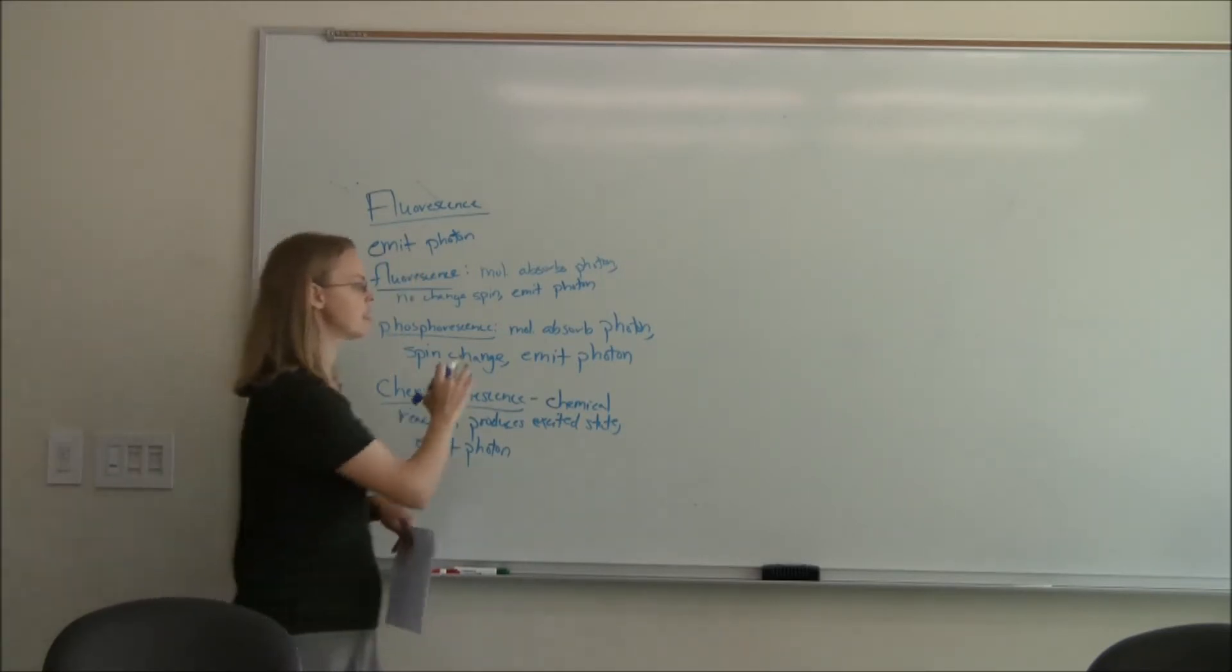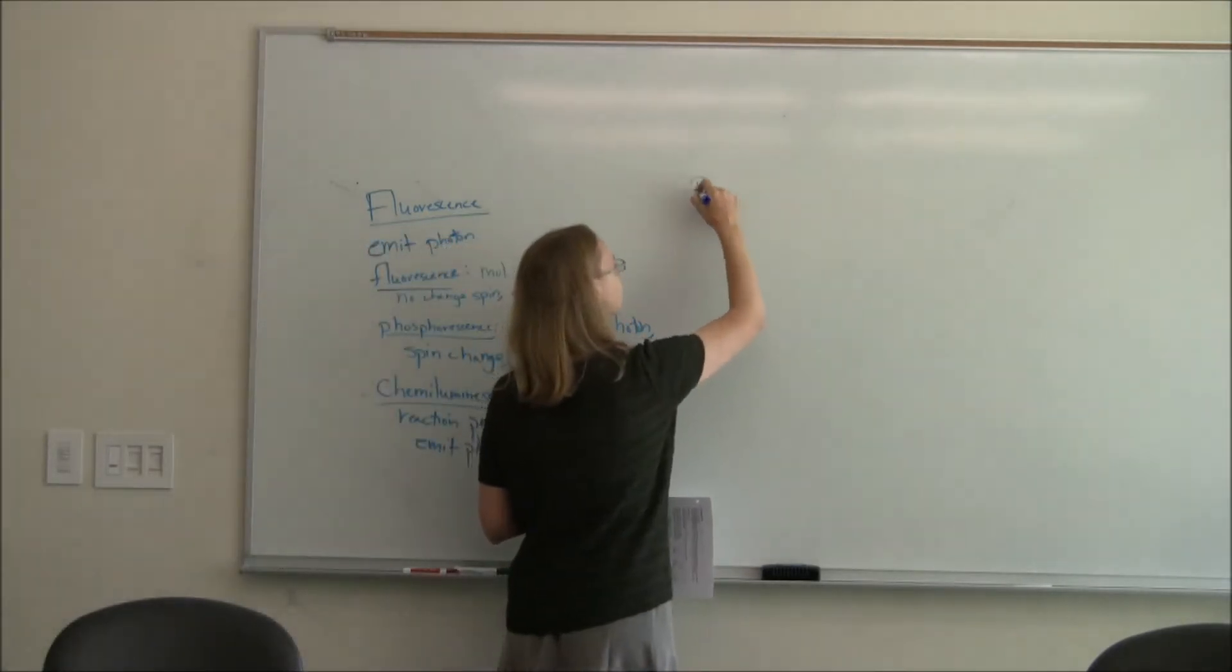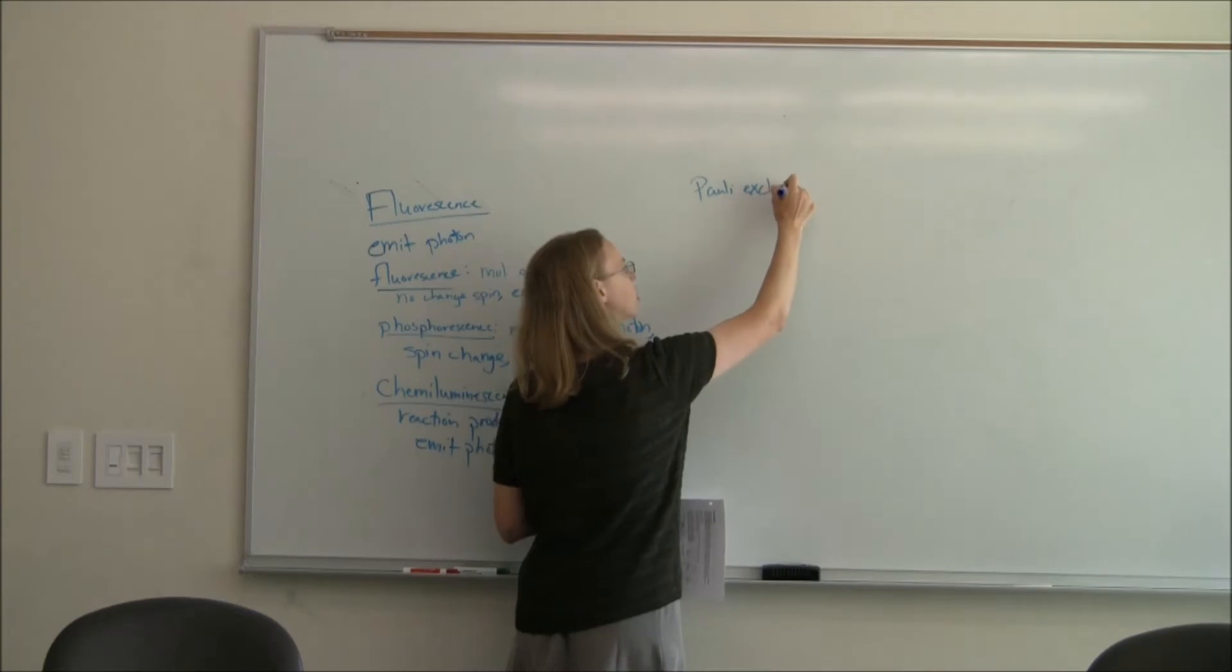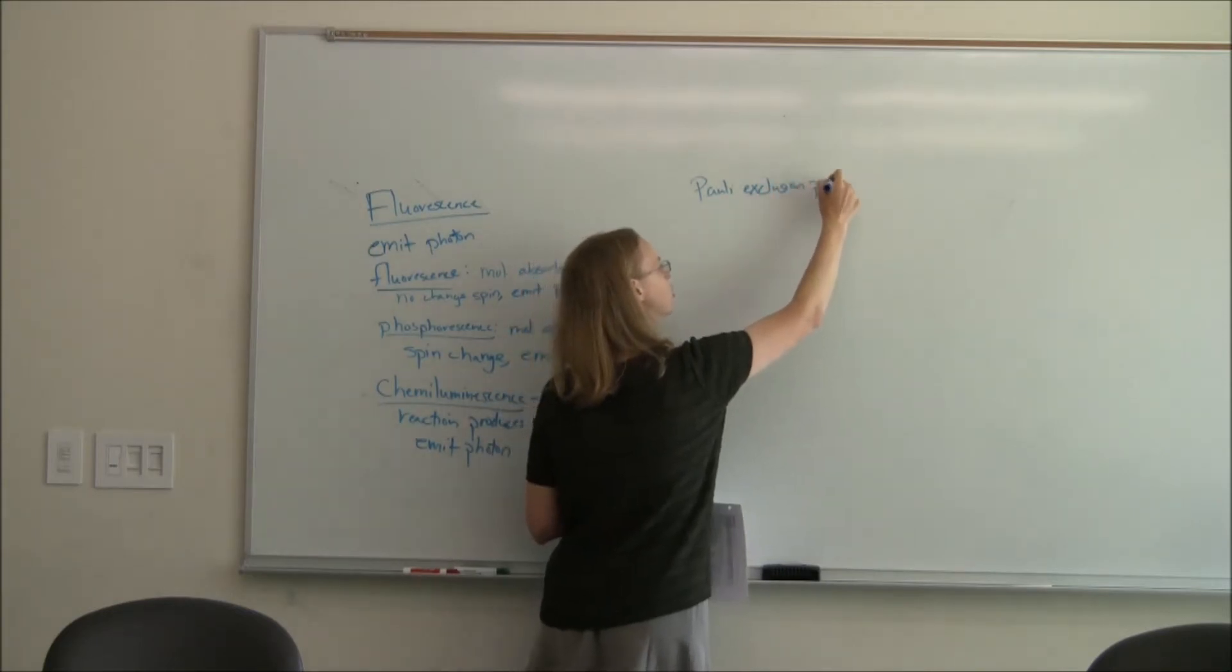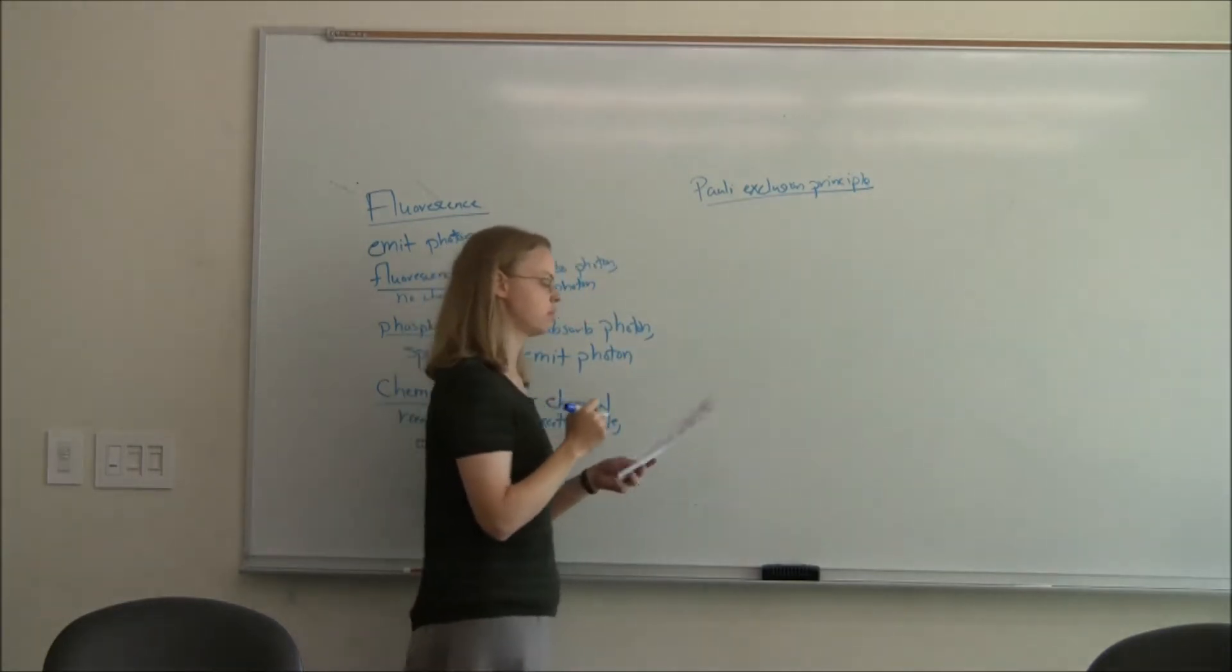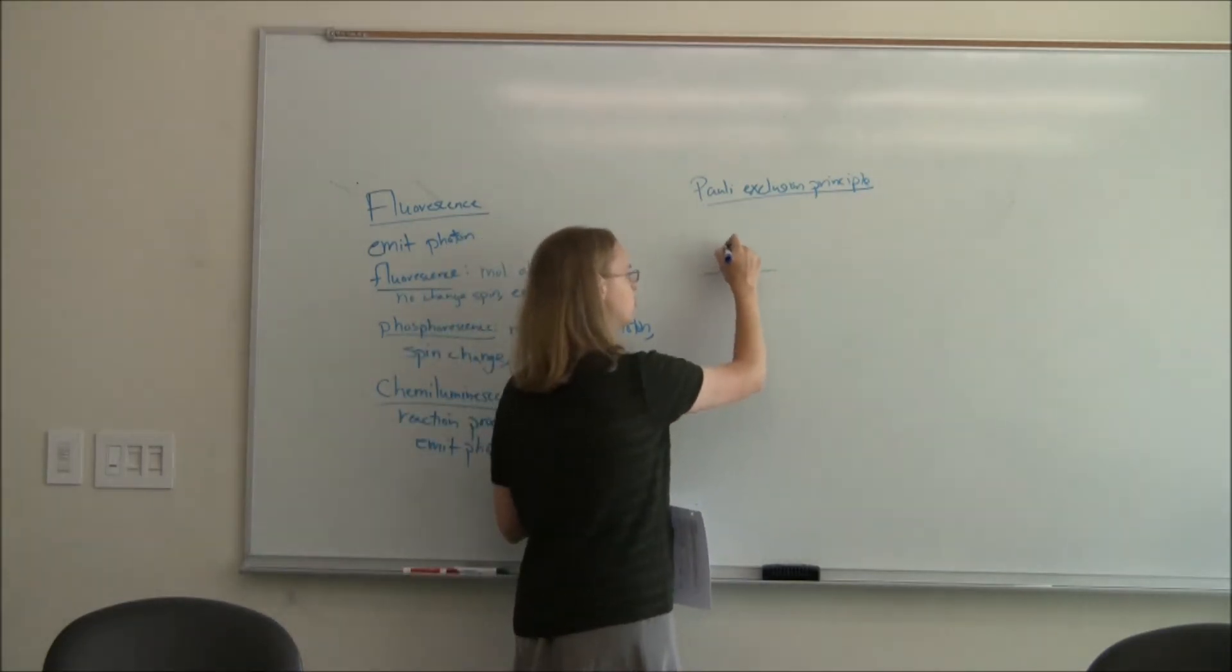We're really concerned with fluorescence with emission of photons. Let's remind ourselves, I've already talked about spin, about electron spins, and the Pauli exclusion principle. Pauli exclusion principle says that we have two electrons in an orbital, and they must have opposite spins.